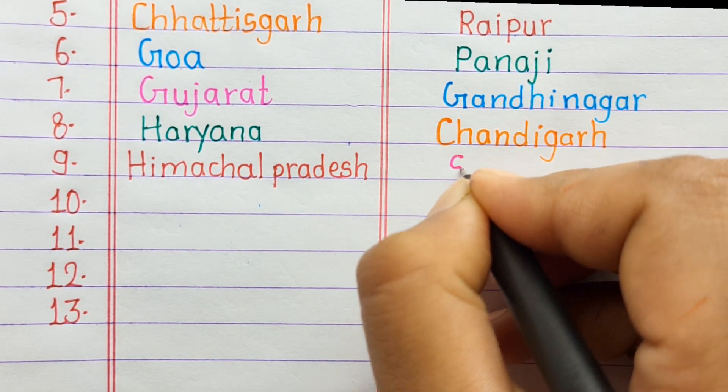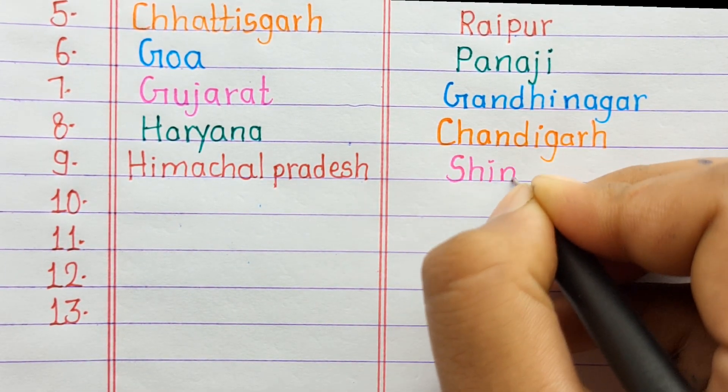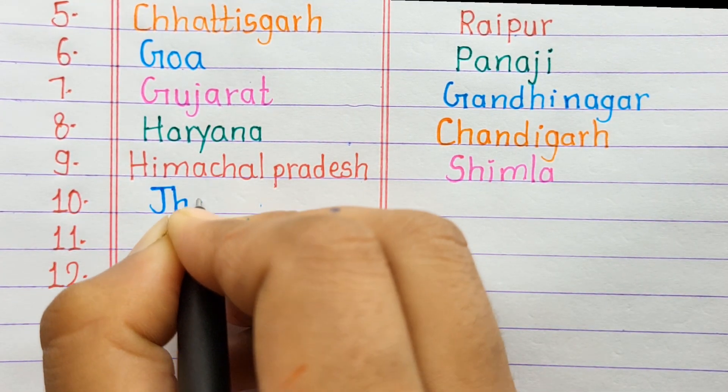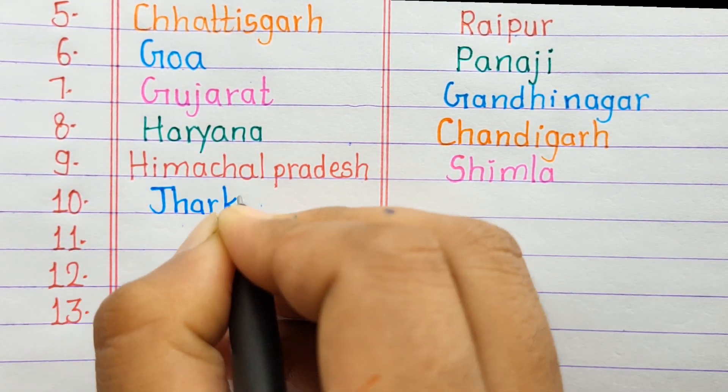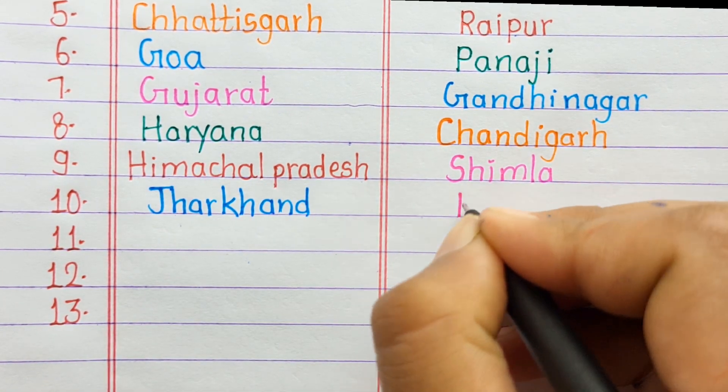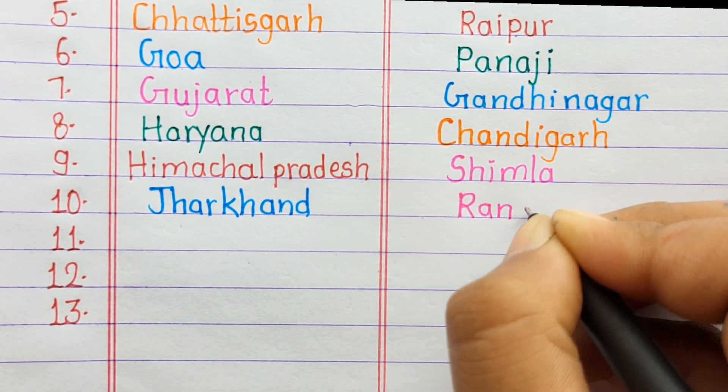Number 9. Himachal Pradesh, Shimla. Number 10. Jharkhand, Ranchi.